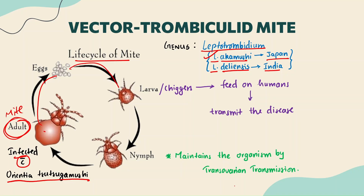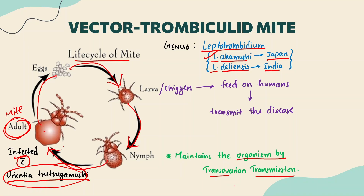The organism is maintained through trans-ovarian transmission. The larval stage converts to nymph, and nymph goes back to adult — the cycle continues. It is the larval stage, also called chiggers, that feeds on humans and transmits the disease. Therefore, Scrub Typhus is also called chiggerosis.